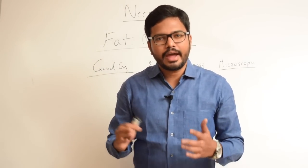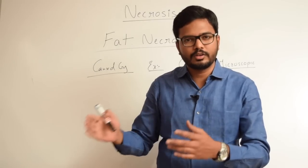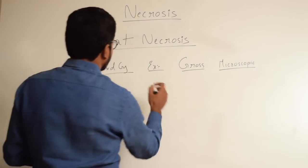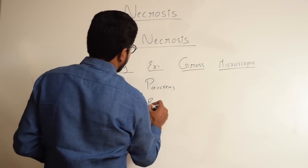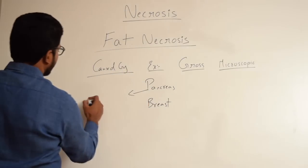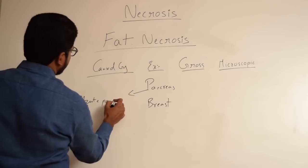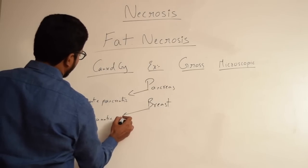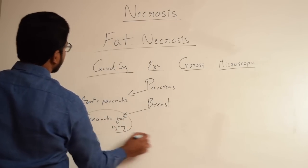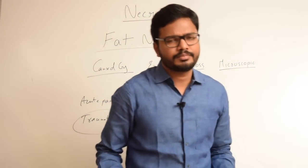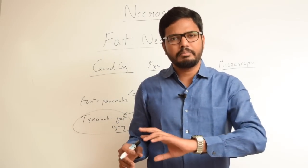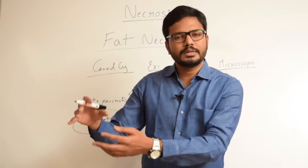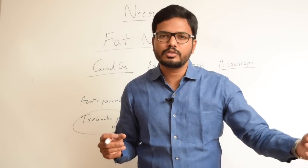Coming to the fourth type: fat necrosis. Fat necrosis is a special form of necrosis commonly seen in two anatomically distinct areas — one in the pancreas and another in the breast. In the pancreas, when there is acute pancreatic necrosis, pancreatic lipases are released. These lipases destroy the pancreas and also start attacking the fat depots present within the peritoneal cavity, sometimes extending into extra-abdominal fat tissue.